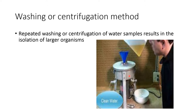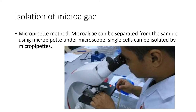Washing and centrifugation method: repeated washing and/or centrifugation of the water sample results in isolation of large organisms. For isolation of microalgae, the microalgae can be separated from a sample using a micro-pipette under a microscope. We observe the microalgae sample under the microscope and a single cell can be isolated using micro-pipettes.